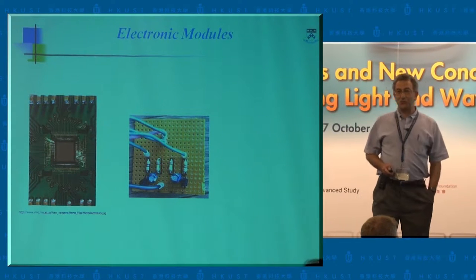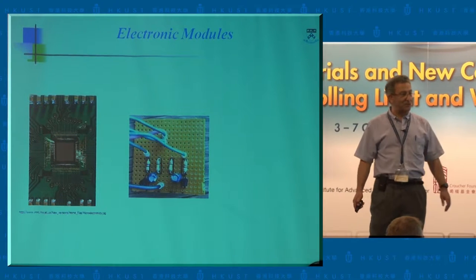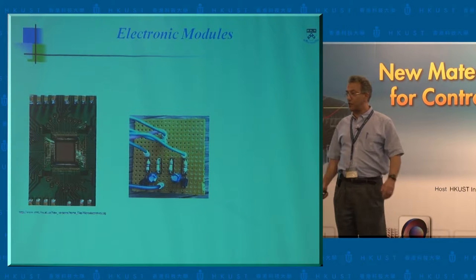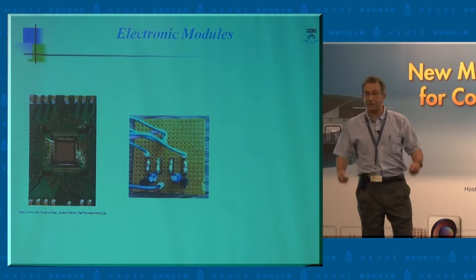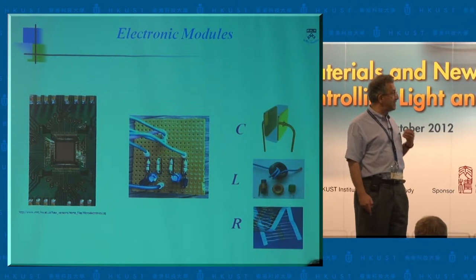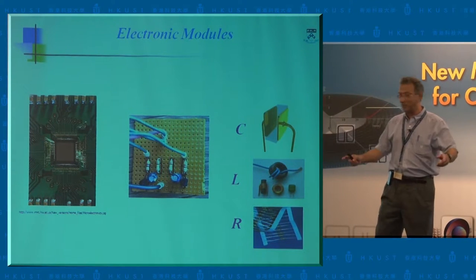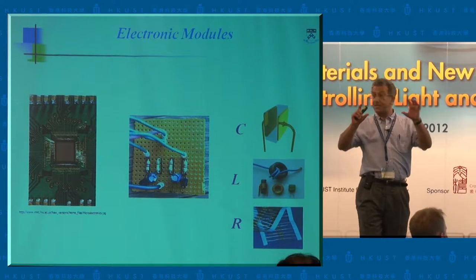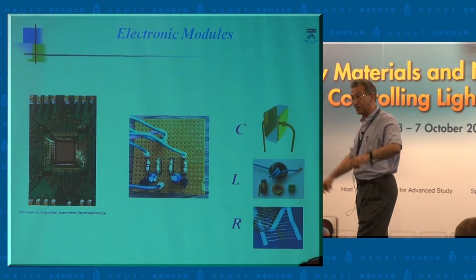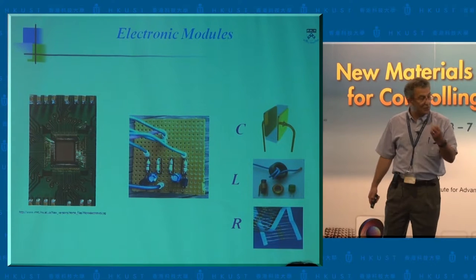Another example close to my heart is electronics. Electronics has seen amazing development and is part of our life. One reason is the physics of electrons — fermions with charges that you can control by fields. But another reason is that in electronics you can modularize the system. These are things we teach undergraduates: resistor, capacitor, inductor. This modularization concept has helped enormously. We'll come back to how metamaterial has helped bring modularization into the field of nanophotonics.